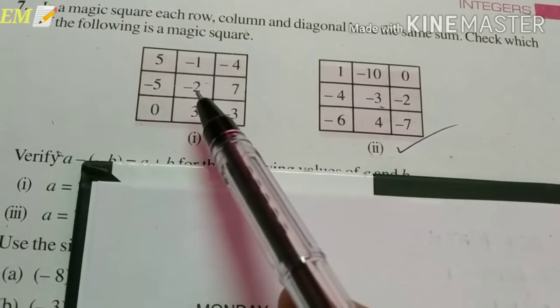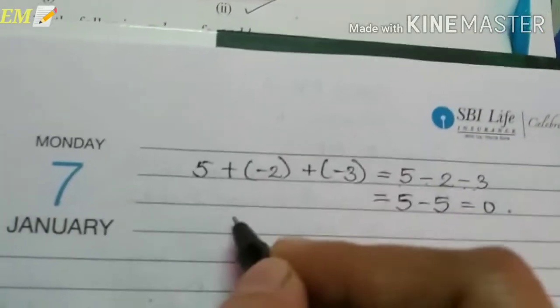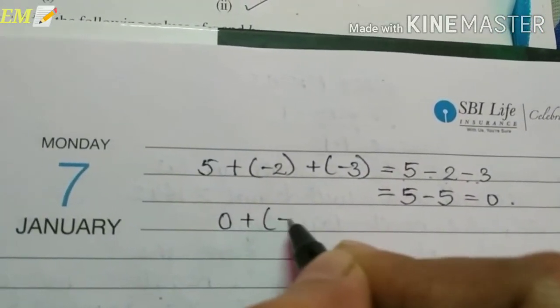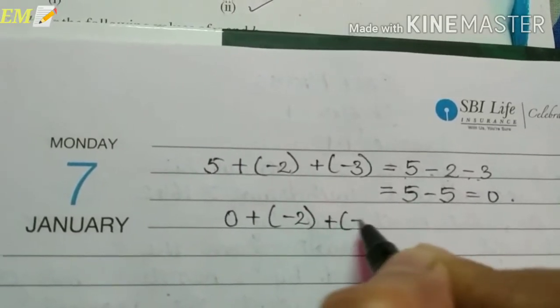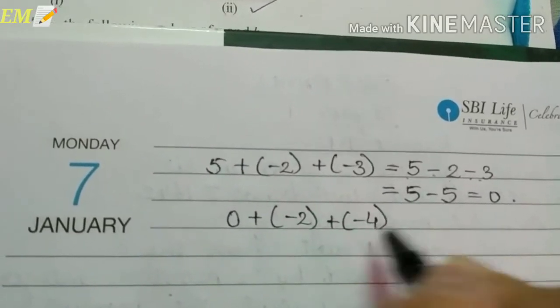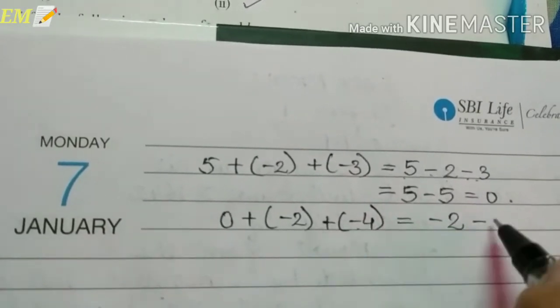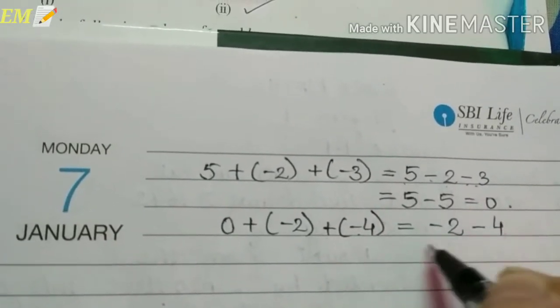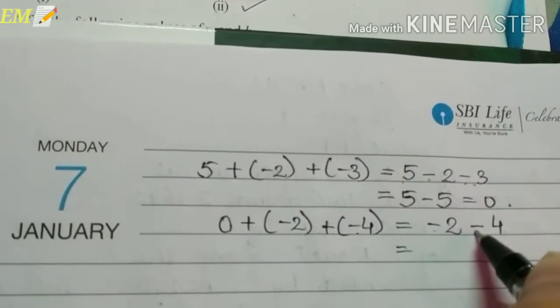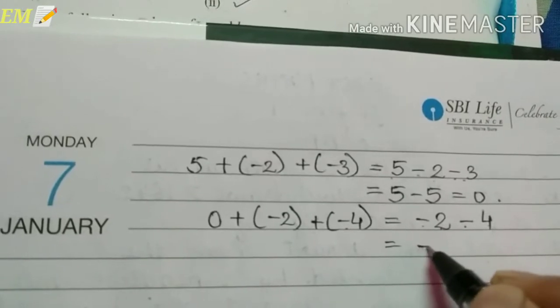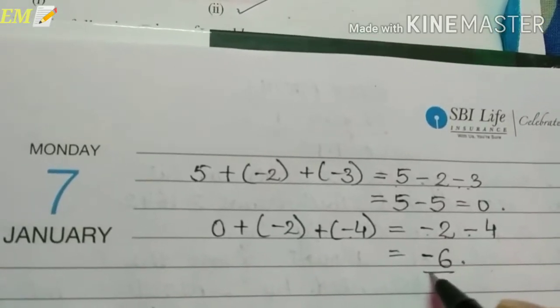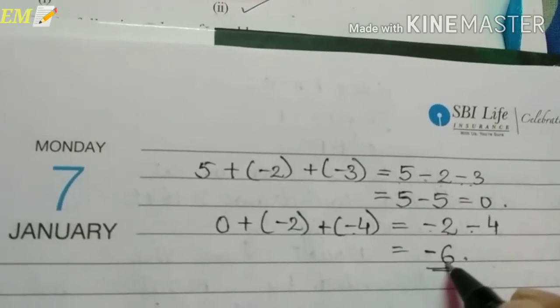The last diagonal: 0 plus (-2) plus (-4). Minus and minus gives plus, so 2 and 4 is 6, but here we got minus 6. So the first matrix is not a magic square.